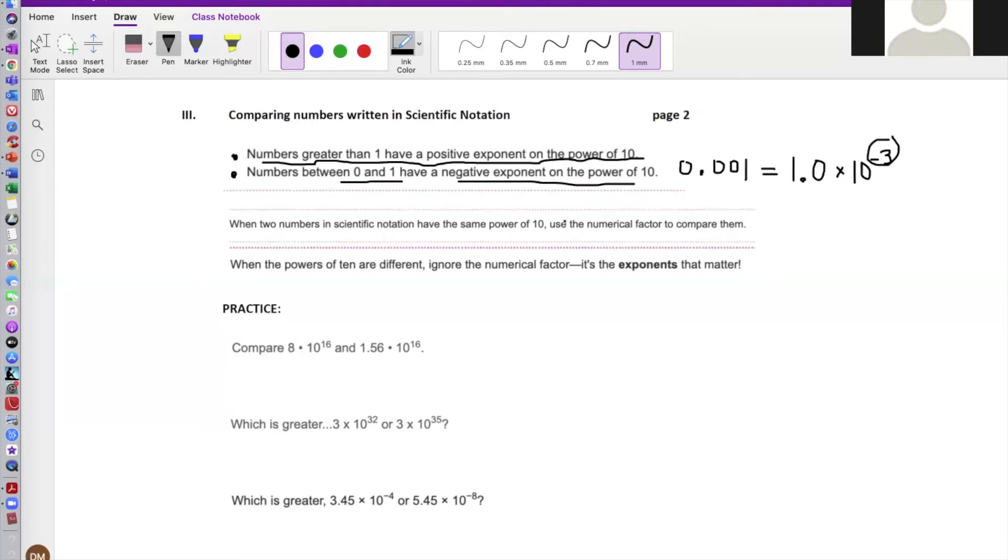Okay, now, rule number one: when two numbers in scientific notation have the same power, the key there is same power of 10, use the numerical factor to compare them, the coefficient. This is what we mean by the numerical factor, the number to the left of the 10 to a power in scientific notation. But when the powers of 10 are different, ignore the numerical factor, it's the exponents that matter.